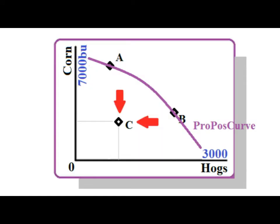Point C, or anywhere below the curve, indicates that the economy is under-producing, below its potential. This may be due to high unemployment or poor management.